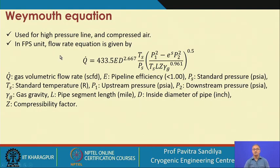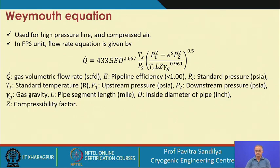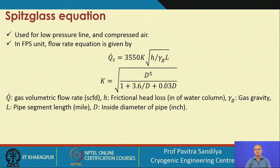Another popular method is the Weymouth equation, used for high pressure pipelines — for example, also for compressed air. In the FPS system, this is the expression for the volumetric flow rate. The equation looks similar to Panhandle A or B; the difference is only in the values of the coefficients. The Weymouth equation for SI units again shows that the coefficient values have undergone some changes.